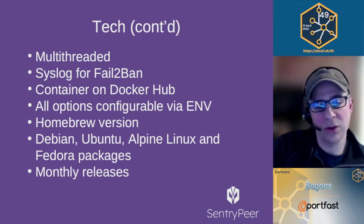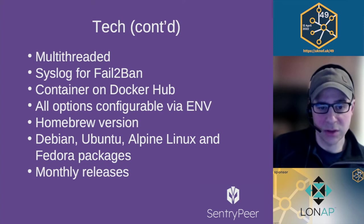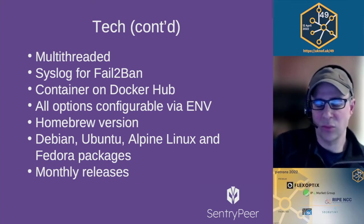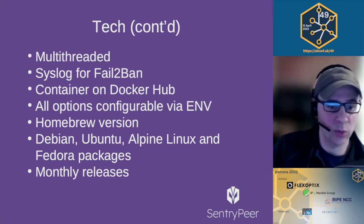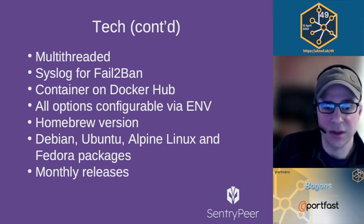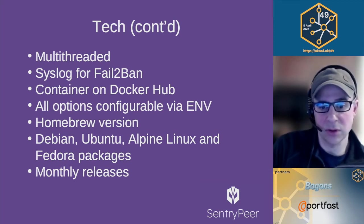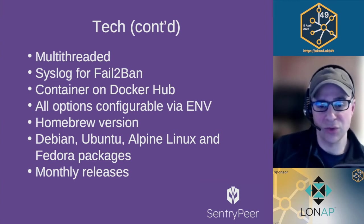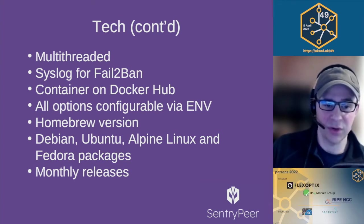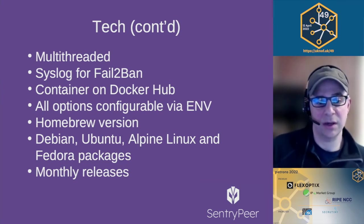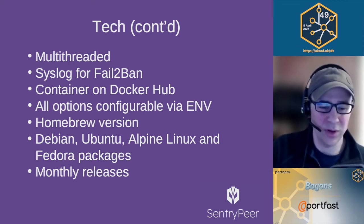It's multi-threaded. There was a contribution for a fail2ban request where anything that's logged — including data coming in over the distributed hash table from another peer — goes into syslog so you can use it for fail2ban. The most up-to-date thing is on Docker Hub — you can just pull it down, do a Docker run, and everything's got environment variables. You can switch the SIP section off and just run it as a node with a REST API that pulls in data from the distributed hash table. You can install through Homebrew, and there are Debian, Ubuntu, and Alpine Linux packages. I do a release pretty much every month.